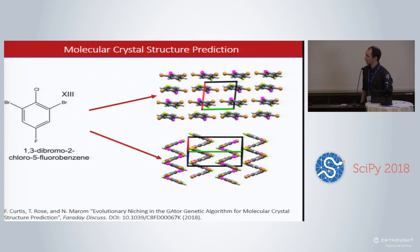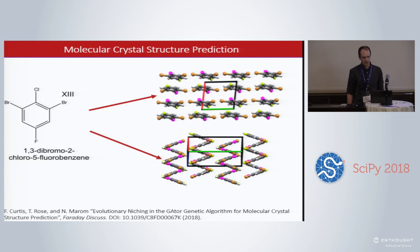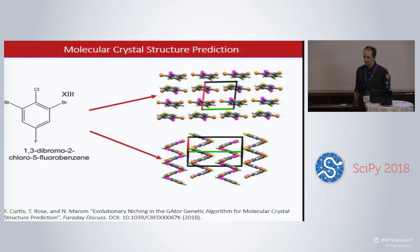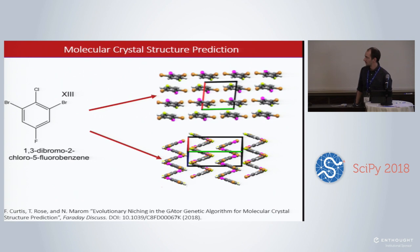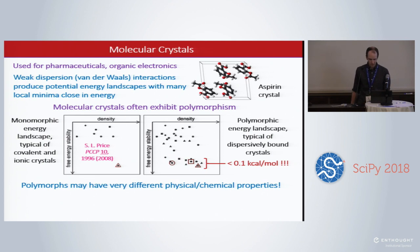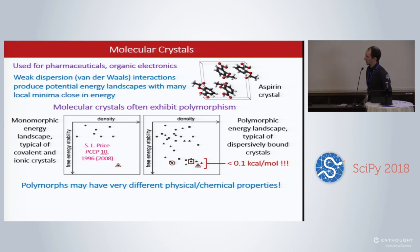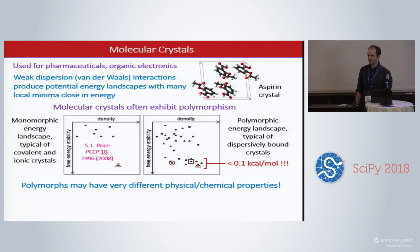So what is molecular crystal structure prediction? Starting from a 2D stick diagram of a molecule, predict what the putative crystal structures of that molecule are when it forms a solid. Here we studied target 13 which came from the Cambridge Crystallographic Data Centre's blind tests. Molecular crystals are used for many applications such as organic electronics, pharmaceuticals, pigments, dyes, explosives, you name it.